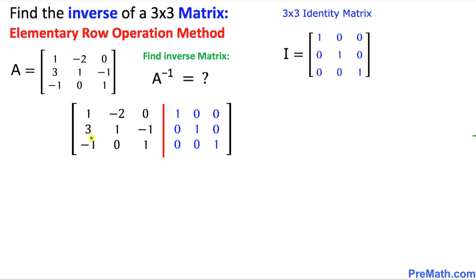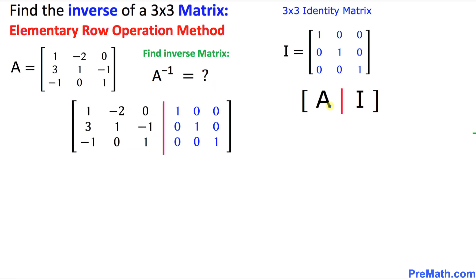the very first thing, I have just set up this augmented matrix. On the left-hand side, as you can see, this is our A matrix, and on the right-hand side, we have the matrix called identity I. So here I have put down on the left-hand side of this matrix our A matrix, as I have shown you,